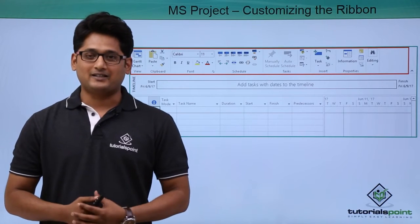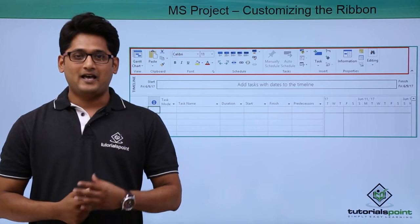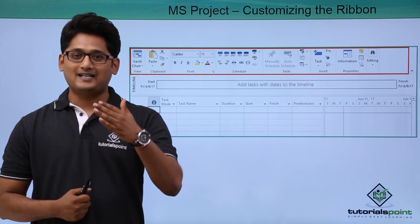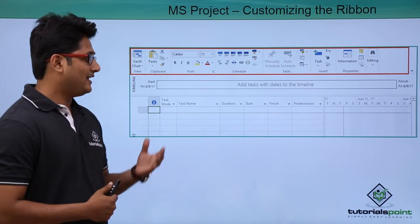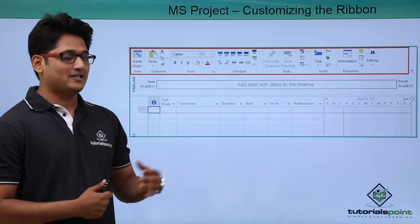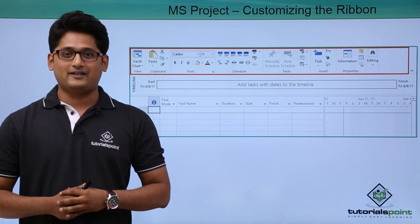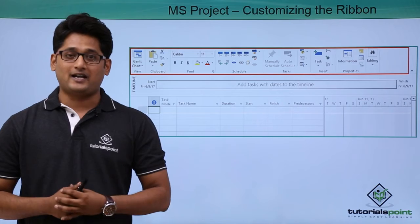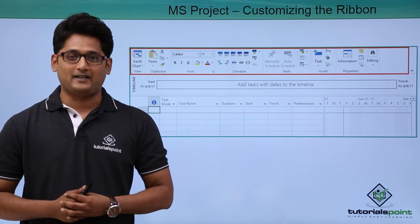Now before we start the customization, first understand what is ribbon. Now if you see on your screen, just below the task tab, the resource tab and the report tab, you can see the area which is right below it. Now the region which is surrounded by the red border is defined as the ribbon.